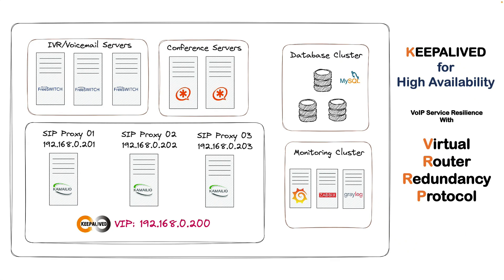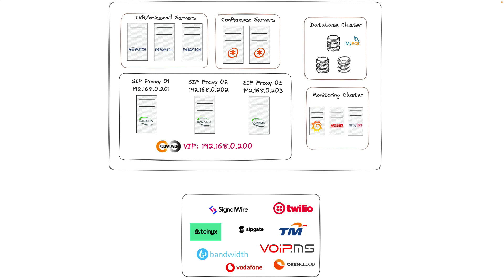Building a reliable VoIP infrastructure involves several critical components: SIP proxies, media servers, databases, monitoring, and so on. These elements work together to provide voice communication services like IVR, voicemail, or conference calls. Let's dive into a practical example with our open-source VoIP Telephony Framework.